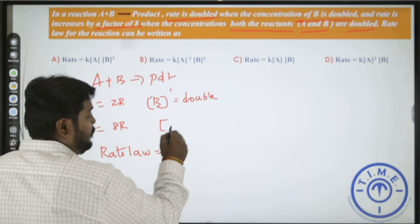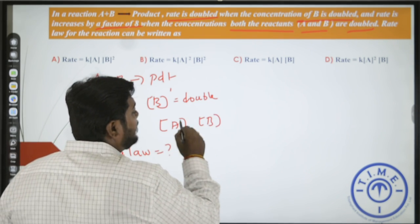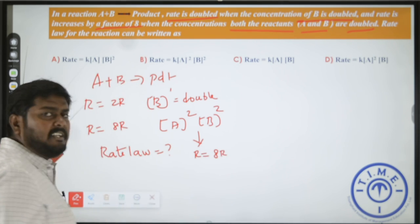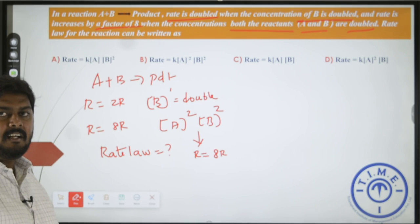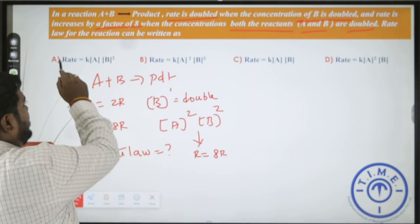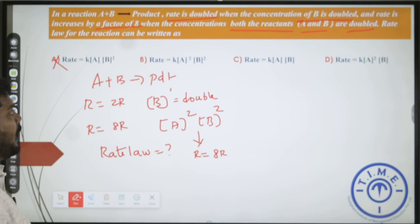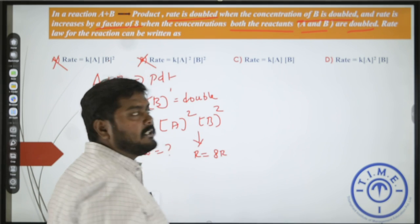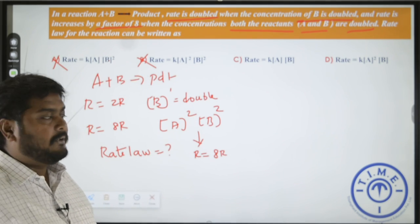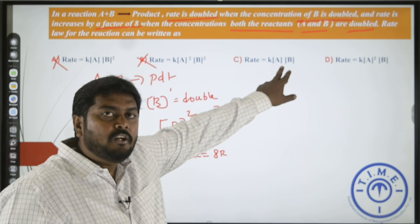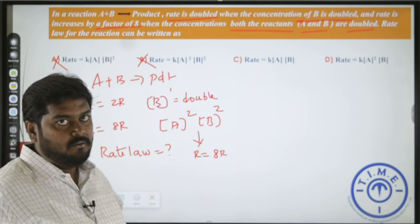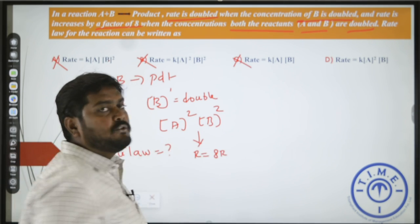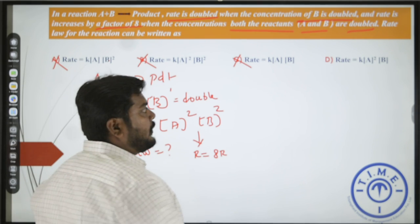When A and B both are doubled, rate becomes eight times. This proves B to the power 1, so the first two options are wrong. For the third option, when A and B are both doubled the rate would increase 4 times — so option C is also wrong.